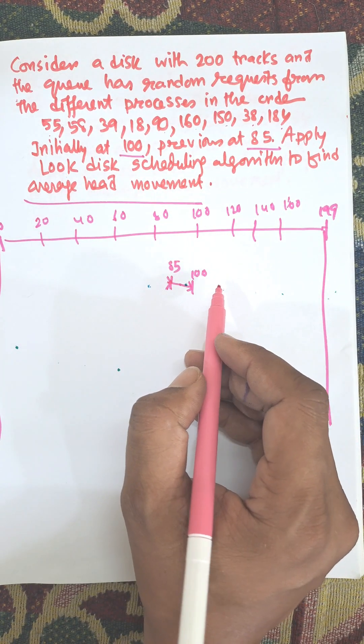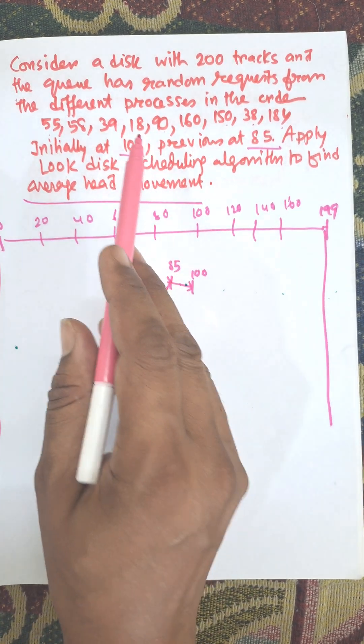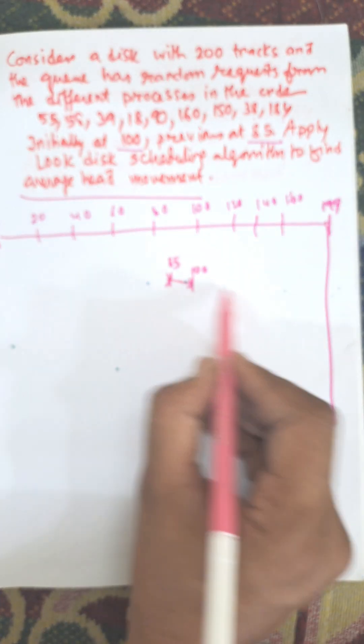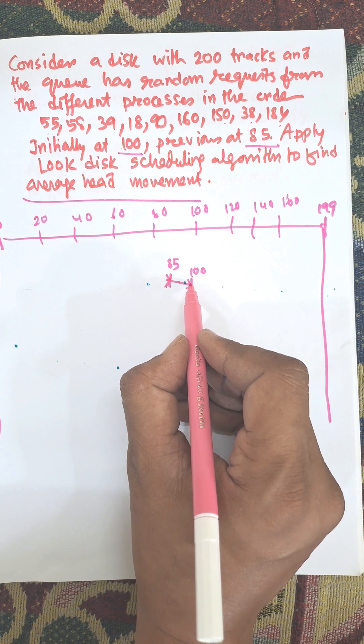Now, we need to move the next cylinder or track toward the forward direction. We can move either forward or backward. I am choosing forward direction.